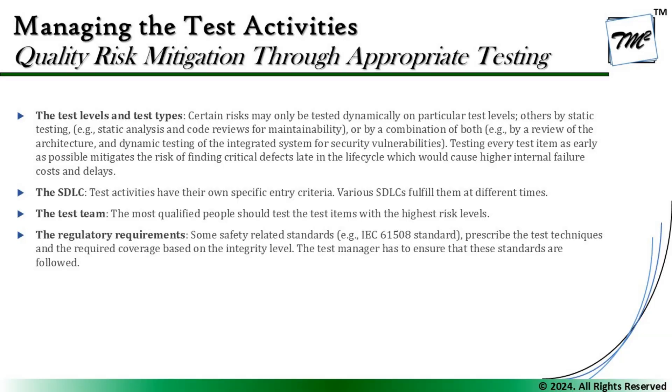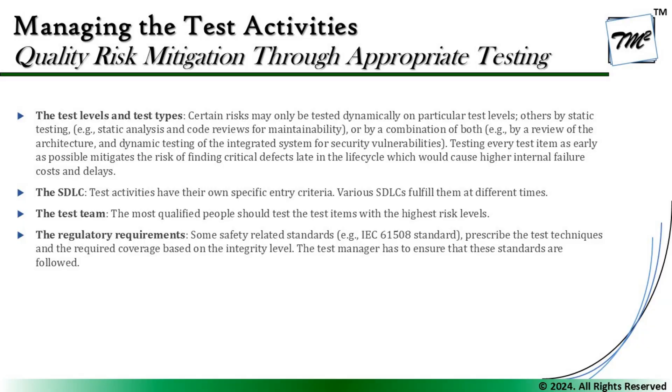The next factor is the overall SDLC: test activities have specific entry criteria and various SDLC models will fulfill them at different times, so SDLC models should be well aligned to test activities. The next factor is the test team: the most qualified people should test the items with the highest level of risk. I would prefer an experienced tester for a high-priority risk item, and might assign a newer tester to a low-risk item. Allocating team skills appropriately is vital — you cannot ask a random test engineer to perform any activity.